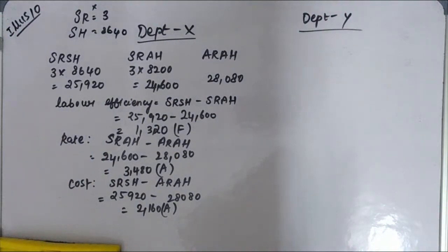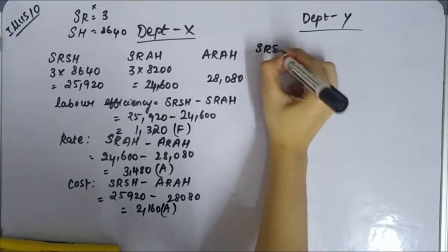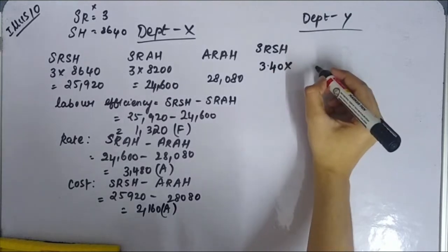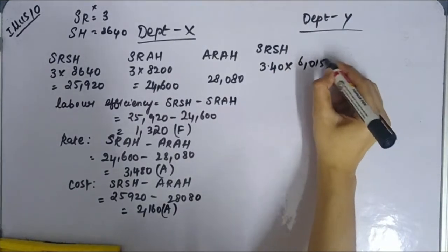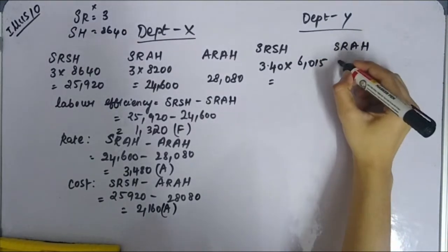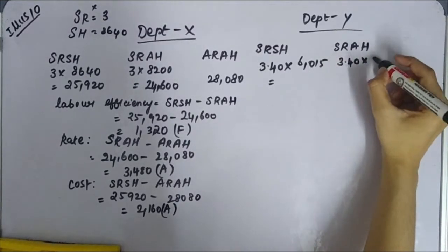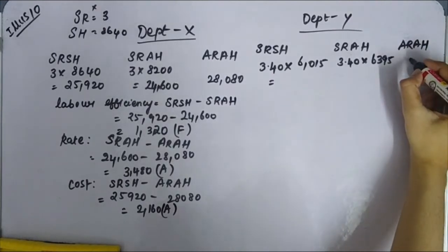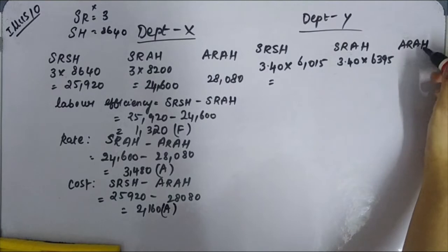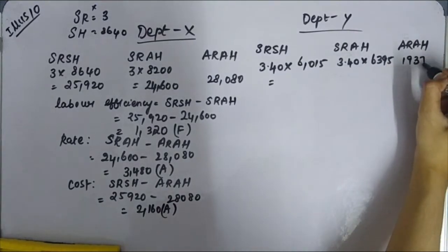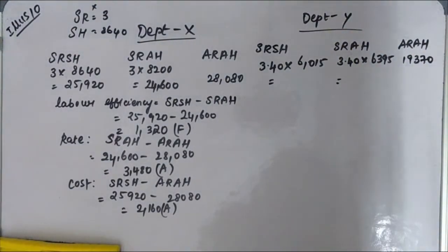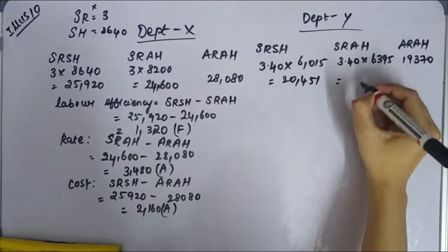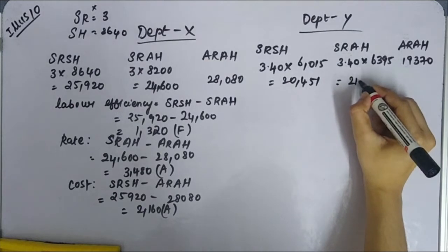For Department Y: SRSH = standard rate 3.45 × standard hours 6,115 = 21,097. Wait — SRSH gives 20,451. SRAH = 3.45 × actual hours 6,395 = 21,743. ARAH = gross wages direct = 19,370.